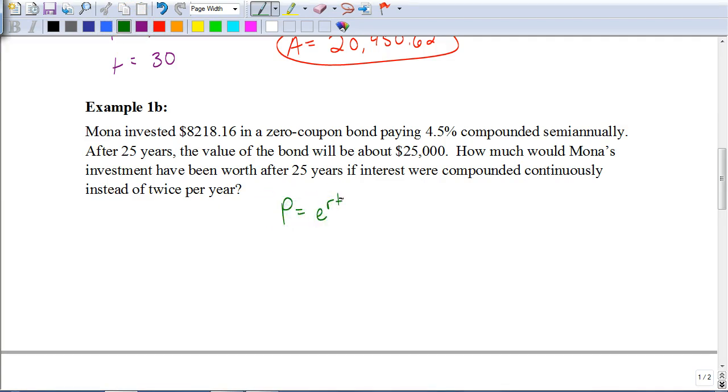Okay, so again, we're using this formula, PERT. So it's the total amount is going to equal your principal times E to the R times T as an exponent. So in this case, your principal is $8,218.16 times E. Your exponent is going to be 0.045 times 25.